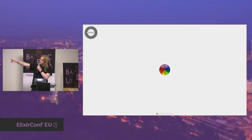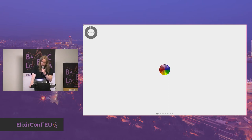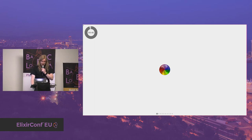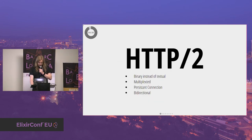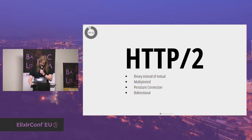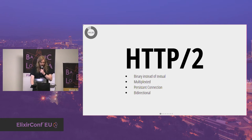Let's talk about writing an HTTP adapter for Phoenix channels. HTTP/2 short overview: it's binary instead of textual, it's multiplexed — one connection with multiple streams — the connection is persistent and can be bi-directional. It's these last two properties that make it appropriate for writing a Phoenix transport.